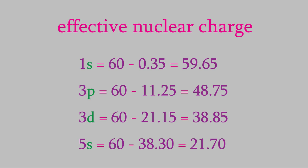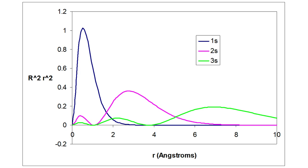As we might expect, the effective nuclear charge is lower as we move to electrons with higher principal quantum numbers, because these are farther from the nucleus on average. However, unlike our earlier, less sophisticated model predicted, the 1s electrons actually don't feel the full charge of the nucleus. That's because it's possible for electrons from other orbitals to briefly move even closer to the nucleus, and therefore shield some of the nuclear charge from the 1s electrons.